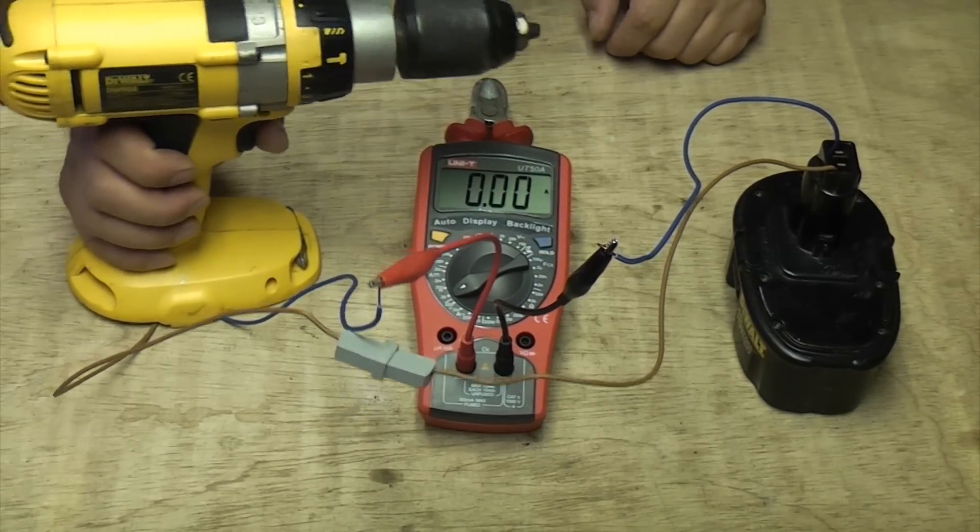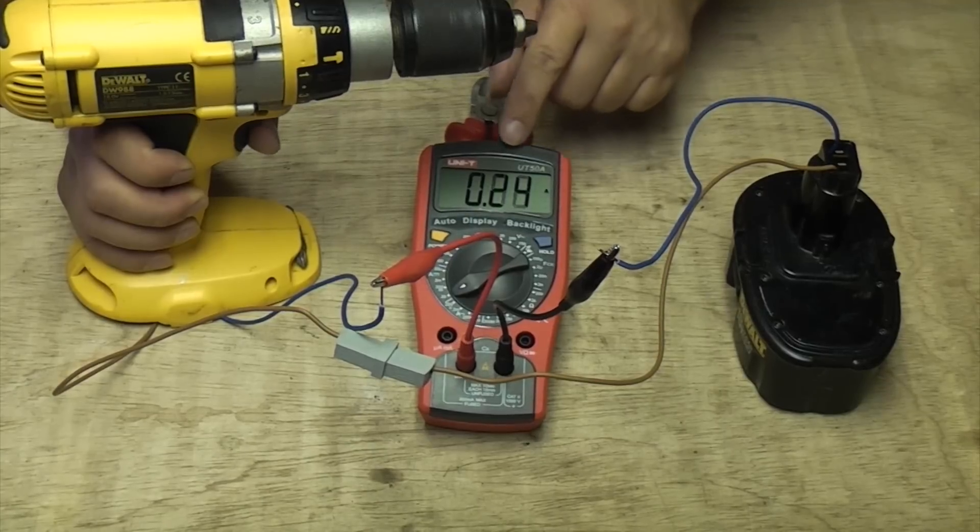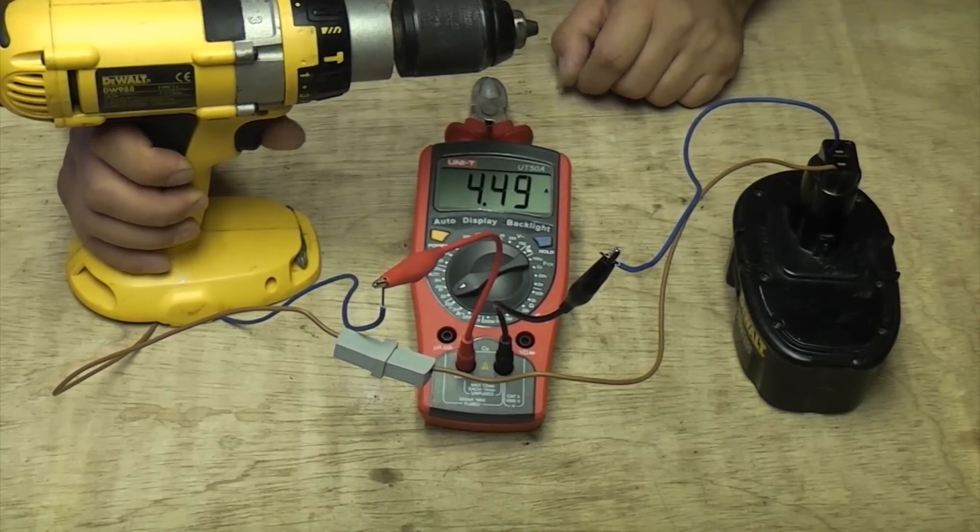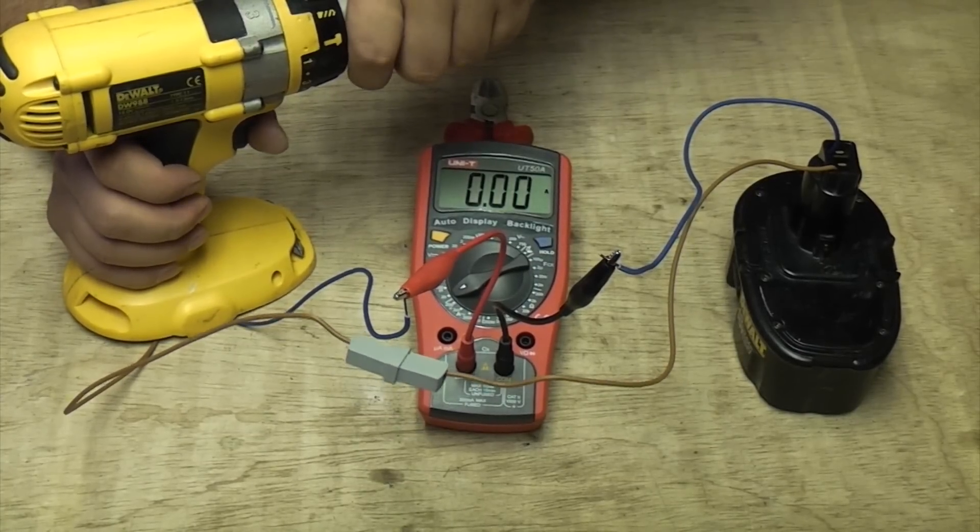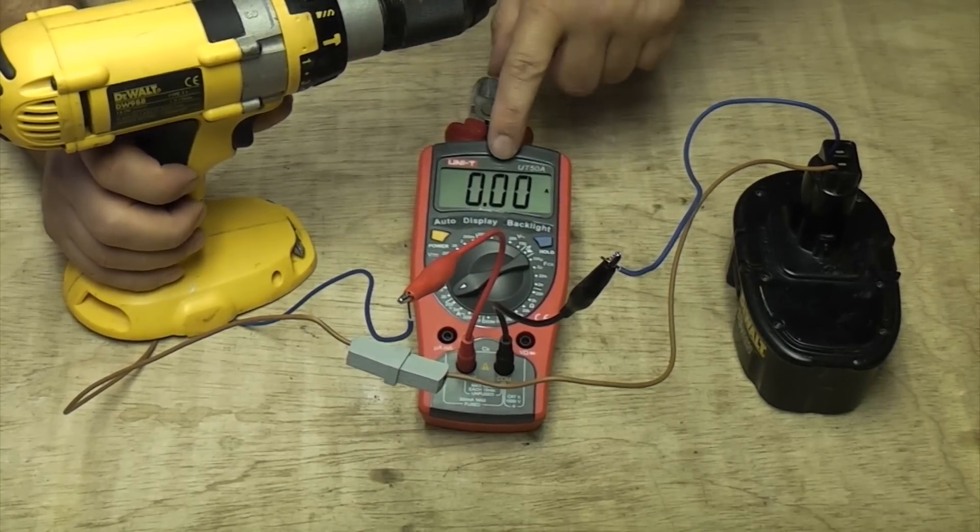So again when we squeeze the trigger you can see that the meter is measuring how many amps are used. And again if we put the machine under a lot of load by squeezing the trigger at the same time you can see that the amps go up.